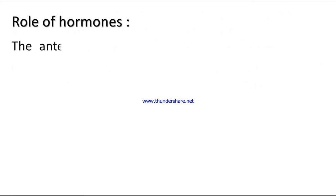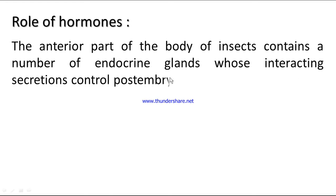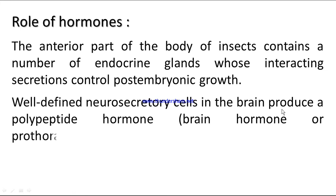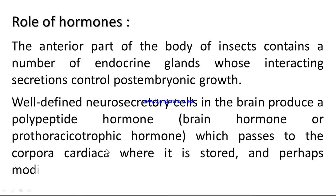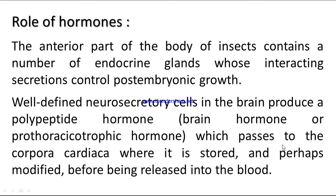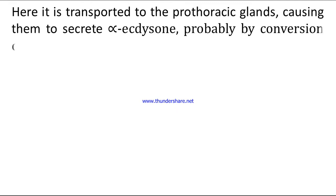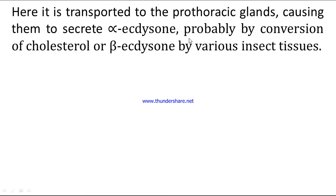The interior part of the body of an insect contains a number of endocrine glands whose interacting secretions control postembryonic growth. Well-defined neurosecretory cells in the brain produce a polypeptide hormone — brain hormone, or prothoracicotropic hormone (PTTH) — which passes to the corpora cardiaca, where it is stored and perhaps modified before being released into the blood. It is then transported to the prothoracic glands, causing them to secrete alpha-ecdysone, probably by conversion of cholesterol, or beta-ecdysone by various insect tissues.